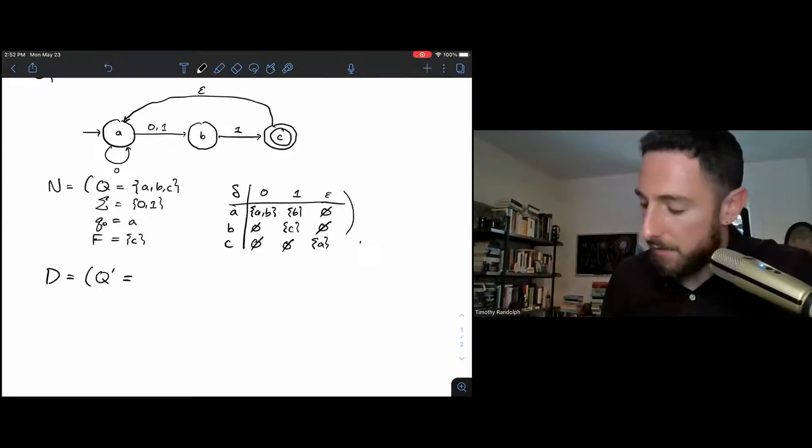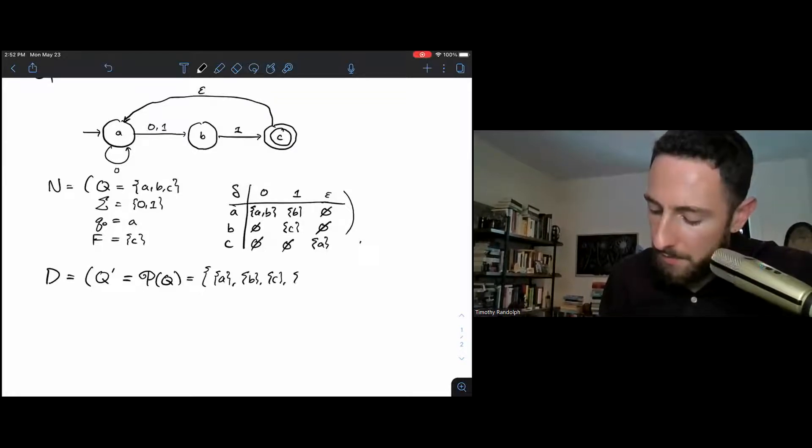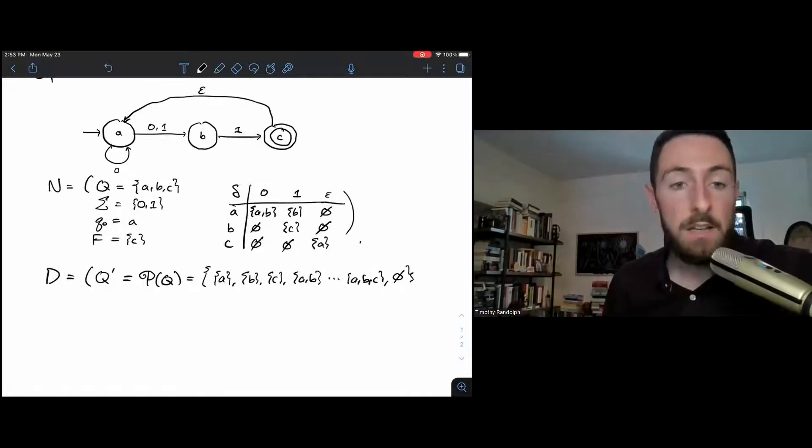So Q prime, the state set of our DFA, is going to be the power set, the set of all subsets of Q. So that is A by itself, B by itself, C by itself, A and B, A and C, B and C, A, B, C, and of course, you never want to forget the empty set, which is also a subset of ABC.